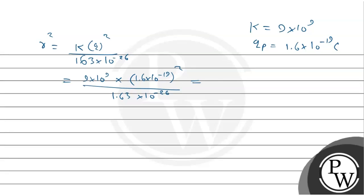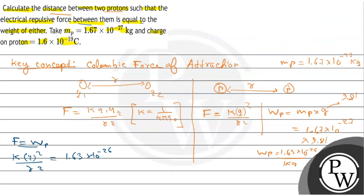That is equals to 1.414 × 10^-2, so R is equals to 11.89 Coulomb, and this is our final answer. Right. The distance between two protons such that the electrical repulsive force between them is equal to the weight of either is 11.89 Coulomb.